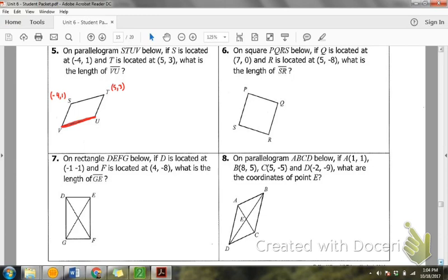Is VU also negative 4, 1, and 5, 3, respectively, since it's a parallelogram? But they're not the exact same points. They're not the same points, right? But they're parallel.